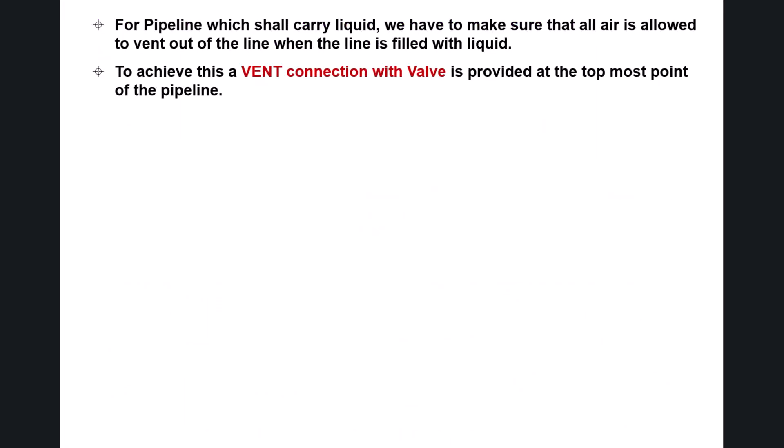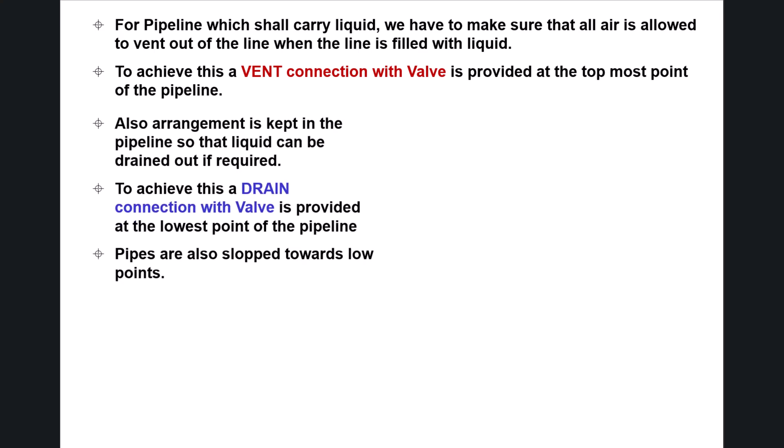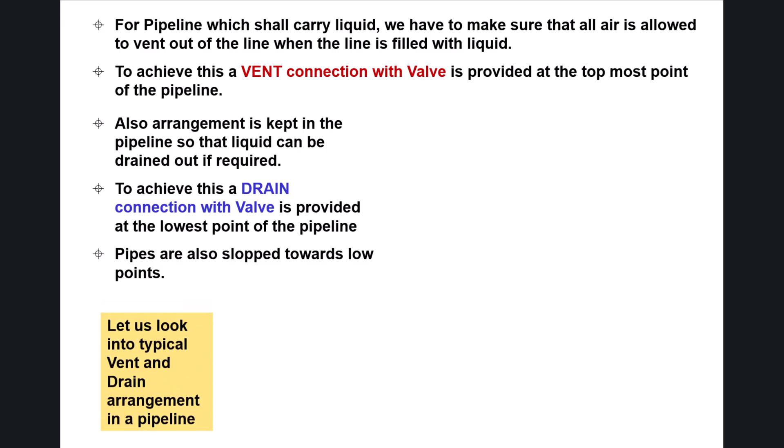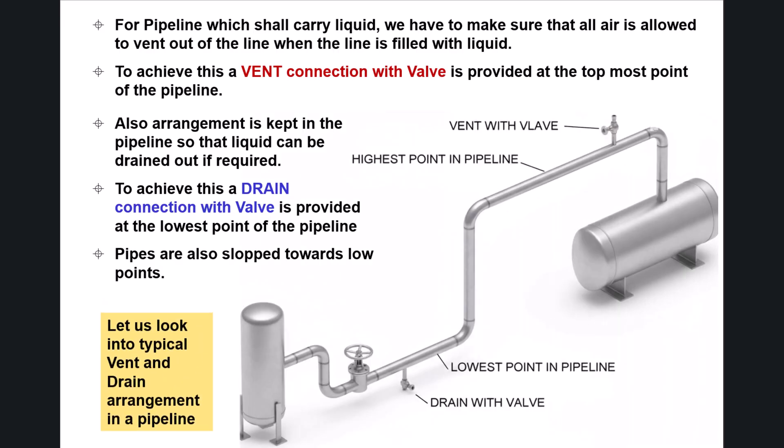For pipelines carrying liquid, we must ensure that all air is allowed to vent out when the line is filled with liquid. To achieve this, a vent connection with a valve is provided at the topmost point of the pipeline. Also, an arrangement is kept in the pipeline so that liquid can be drained out if required — a drain connection with a valve is provided at the lowest point of the pipeline. Pipes are also sloped towards low points.